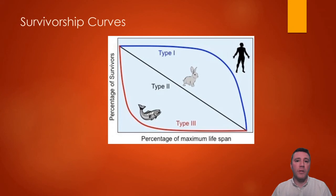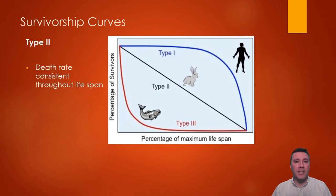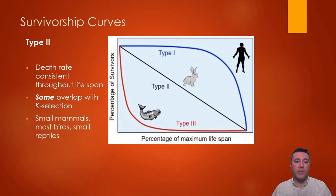Species with a type 2 survivorship curve experience a relatively consistent death rate at all stages of their lifespan. Great examples of species that fall into this category include small mammals, some small reptiles, and most birds.